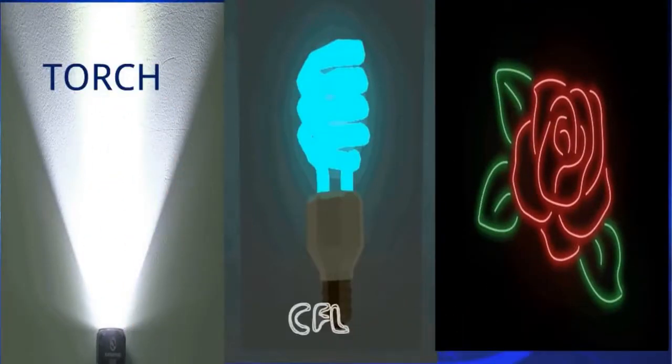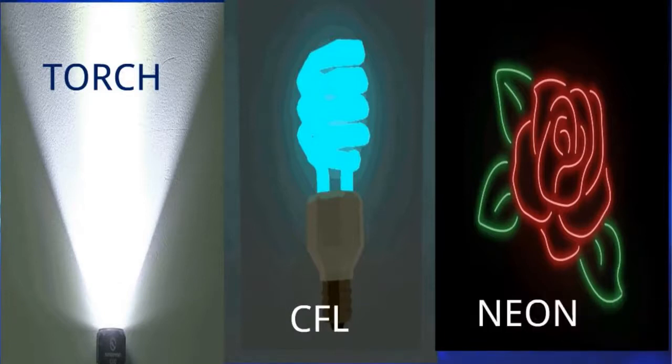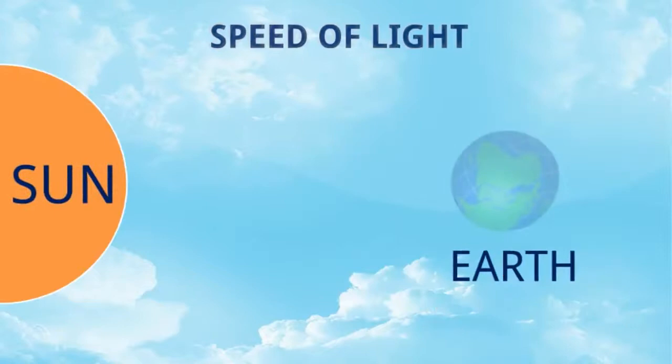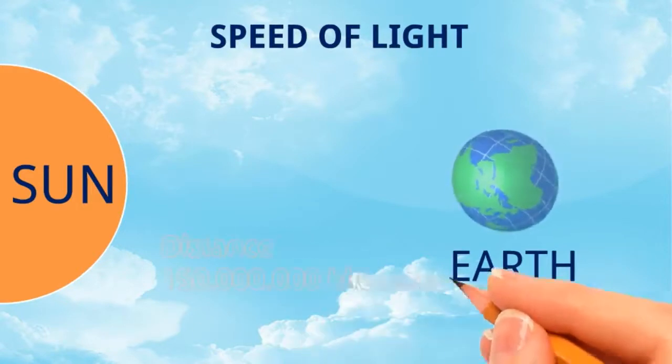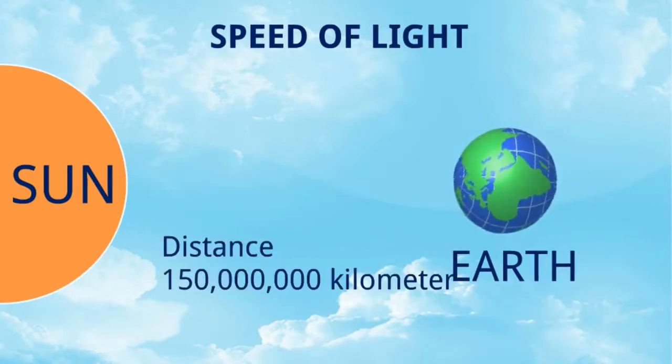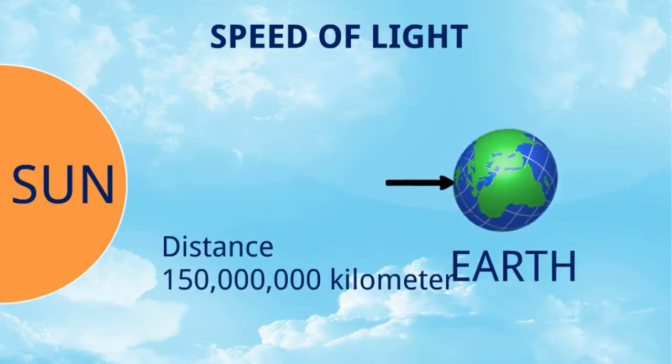Speed of light: we know light comes from the sun, and that is why it is daytime and we can see all these things. The distance between the sun and Earth is 150 million kilometers.